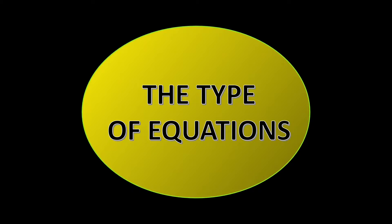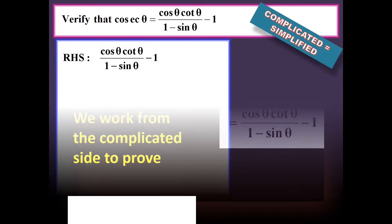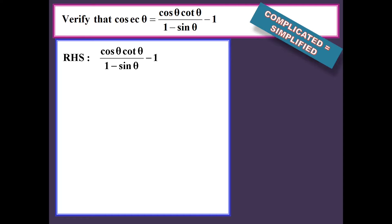Once we know all that, we must also know what types of equation you need to prove. Sometimes they will give you a complicated side equals a simplified equation — you have a complicated side and a simplified side. If you have an equation like this, we work from the complicated side to prove it. Let's look at the question — we will start from the complicated side.